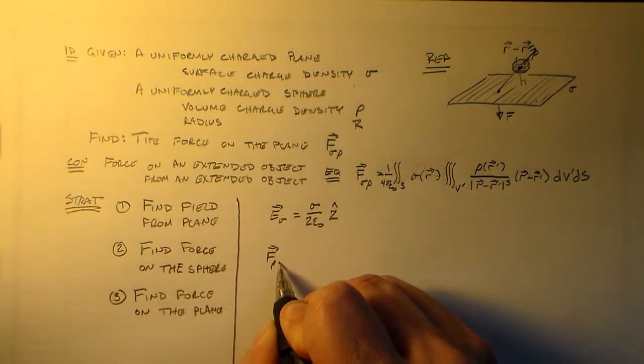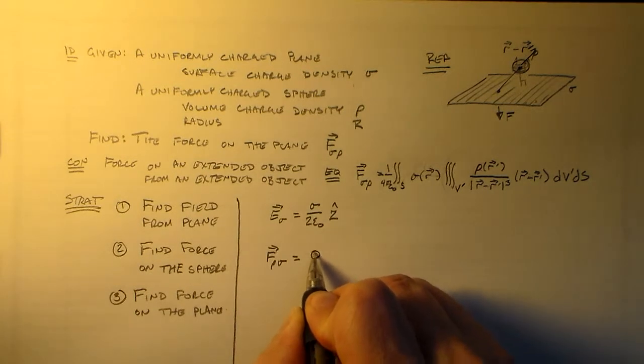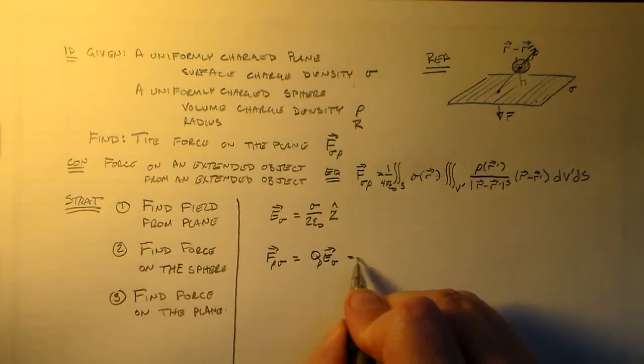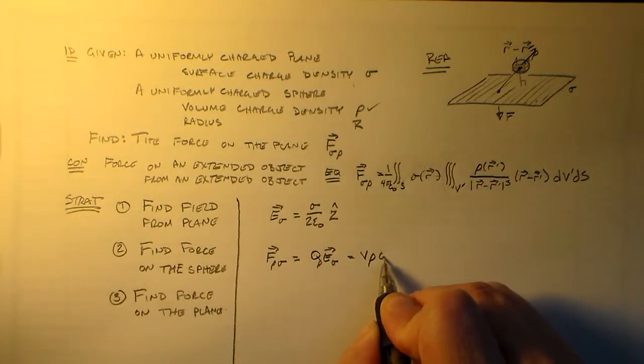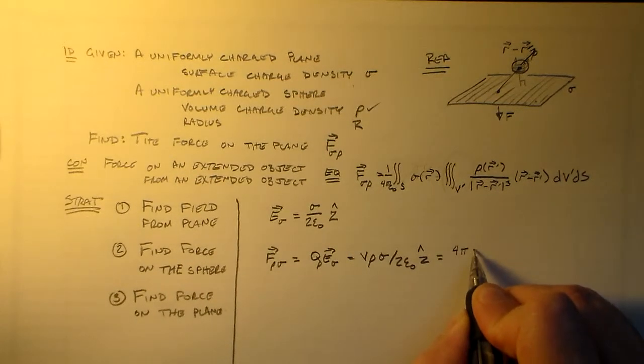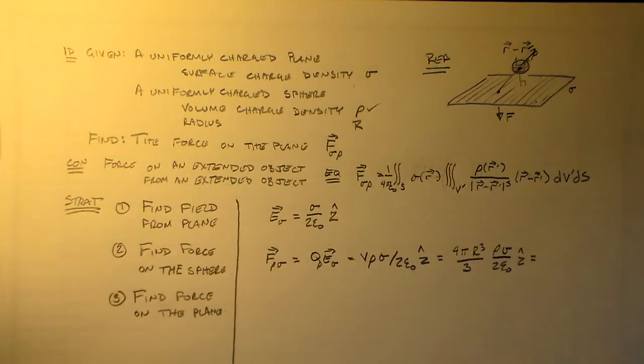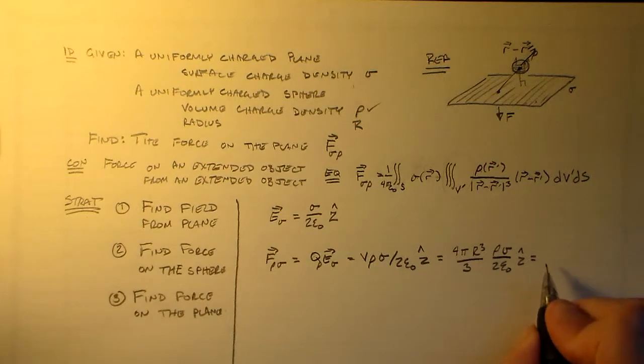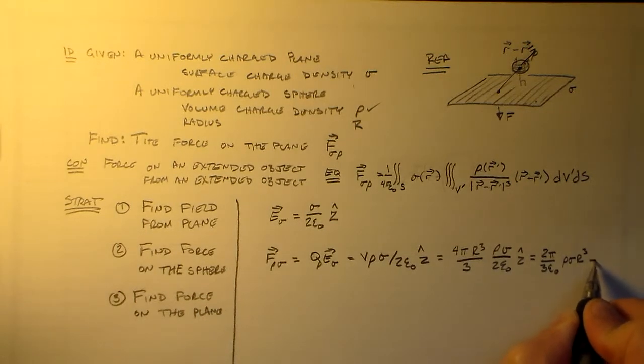And then the force on rho from sigma is just going to be q times e sigma, q of rho and e sigma. And q rho is just going to be the volume times the charge density. This guy. And then e sigma is this other charge density over 2 epsilon naught. And that's all in the z-hat direction. The volume is 4 pi r cubed over 3. And then we have rho sigma over 2 epsilon naught z-hat. And that's not really the prettiest thing that I've ever seen. So we're going to go with 2 pi over 3 epsilon naught. We like that, so we've got the pi's. Then we have rho sigma r cubed in the z-hat direction.